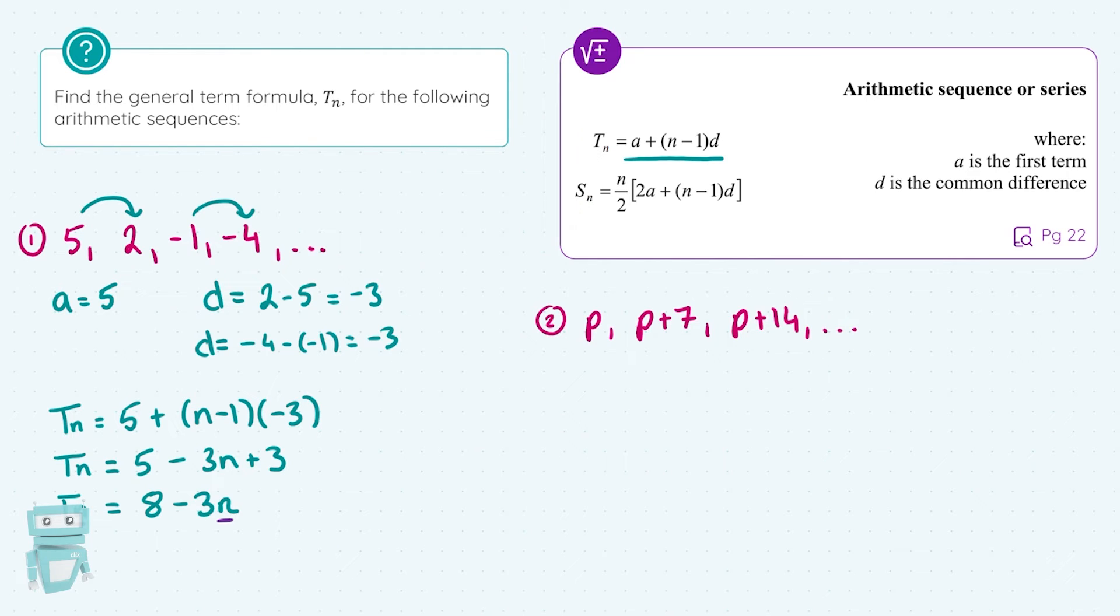Let's apply this formula to another pattern. We have P, P plus 7, and P plus 14. So straight away, I'm going to say what A is. A is the first term, which equals P. And our common difference here, we're adding on 7 each time. So D is just going to be 7. And again, I'm going to plug these figures into our formula.